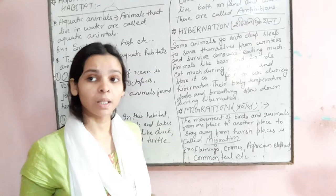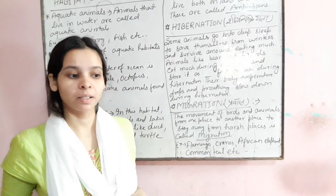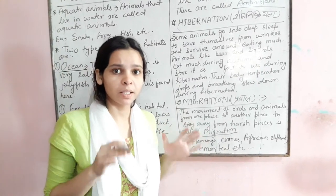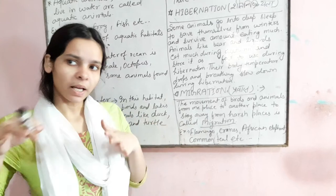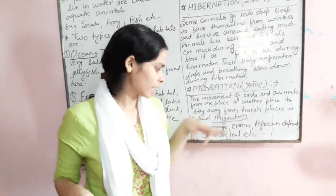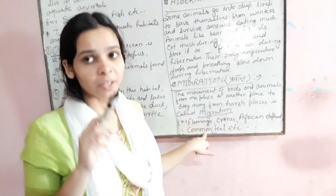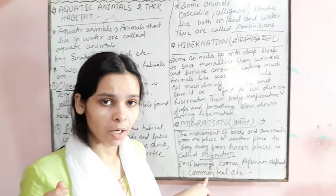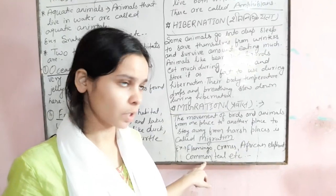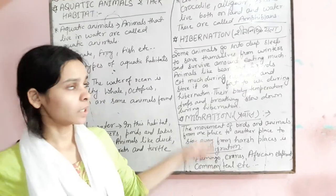In India, there are a lot of migrations. India is a hub of migration, a place where many birds come from other regions. Some examples are flamingos, cranes, and African elephants. This concludes Chapter 2.